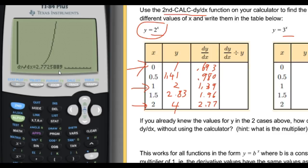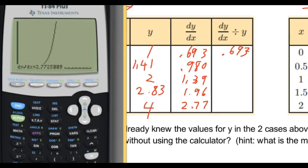It says to take the derivative values and divide by the y value. So 0.98 divided by 1.41 is 0.695 — pretty close to 0.693. Then 1.39 divided by 2 gives 0.695 also. Then 1.96 divided by 2.83 gives 0.693. And 2.77 divided by 4 gives 0.693. All these values are very similar. If I divide the derivative by y, I always get the same value of 0.693.